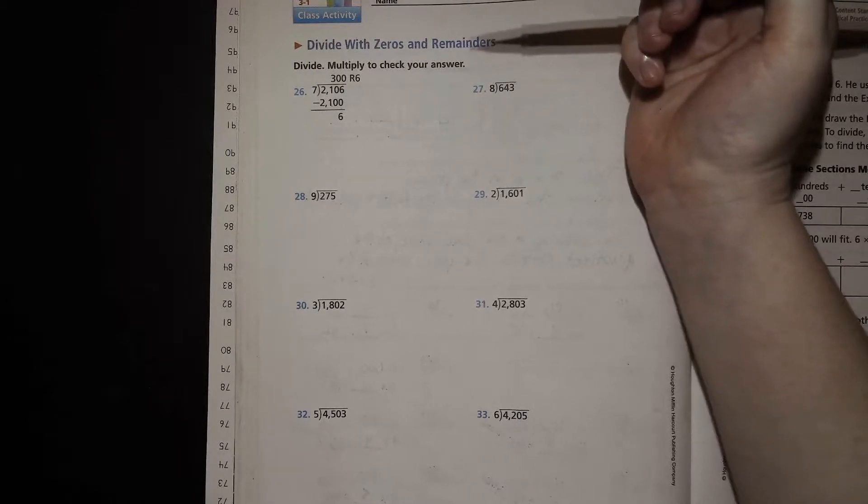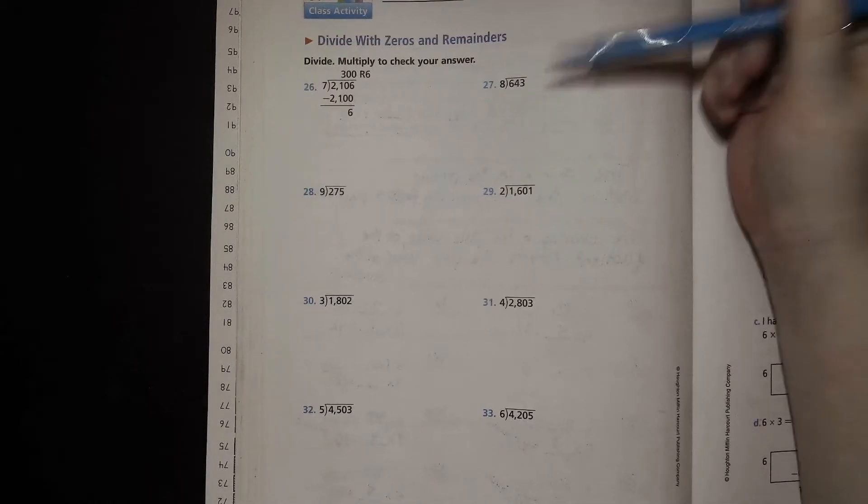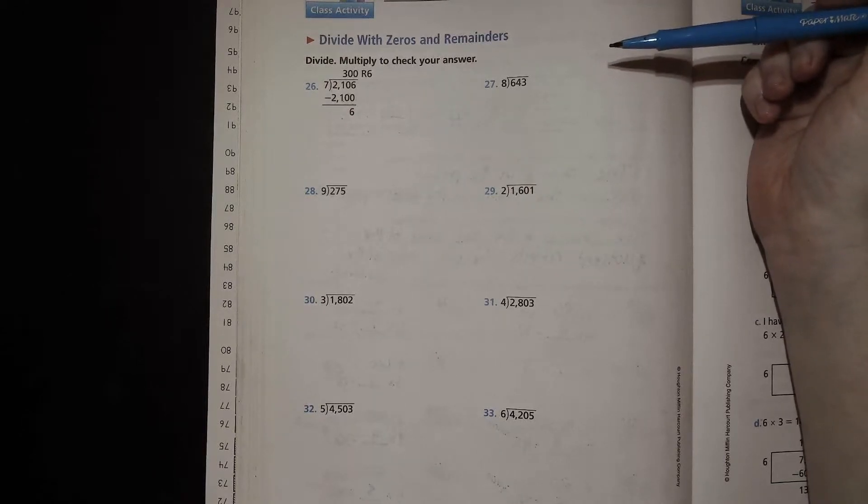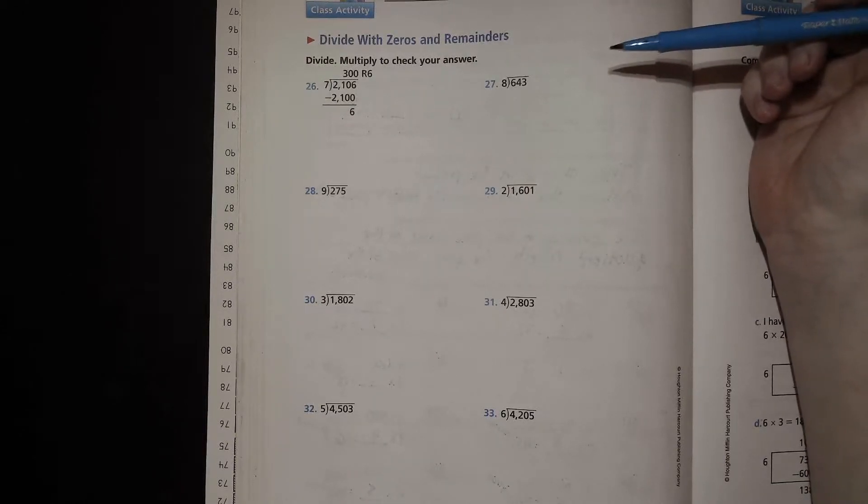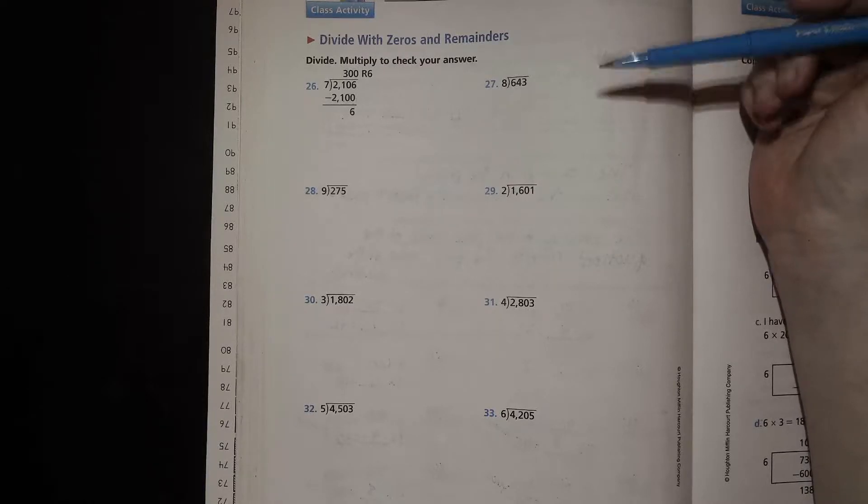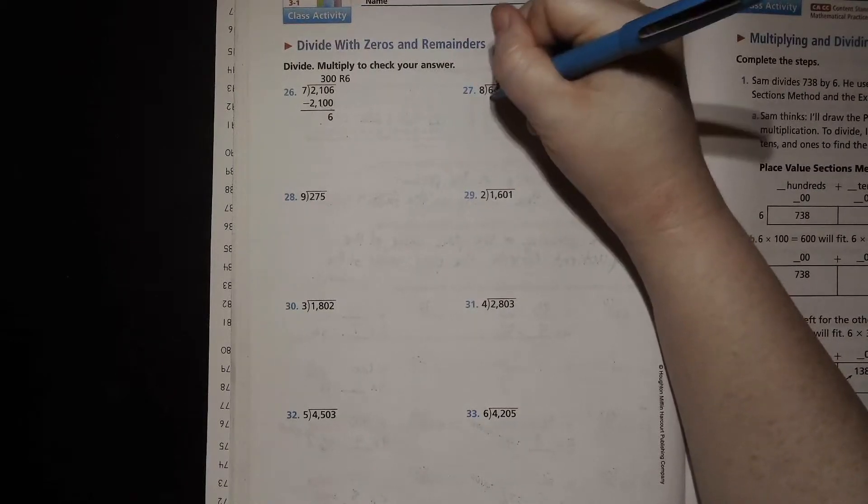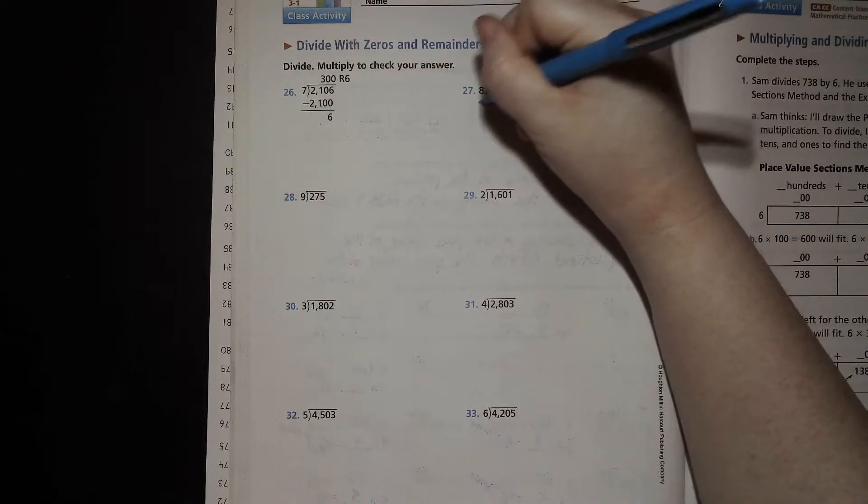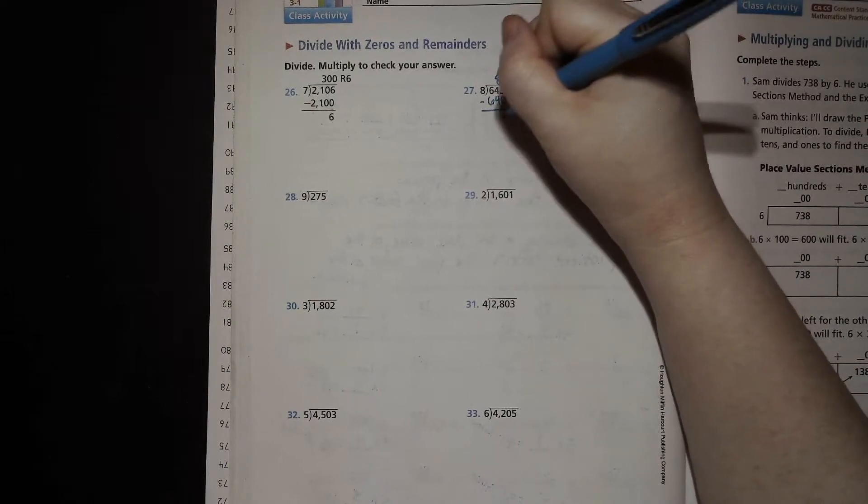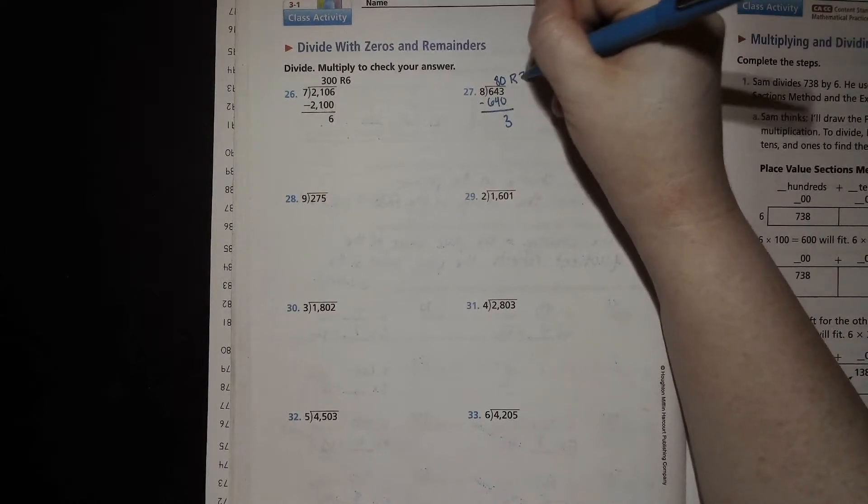Okay. 8 goes into 643. How many times? Well, 8 goes into 640, 80 times, right? Because 640 is 64 tens. So it's just 8 tens. 640. Line that up. Subtract. We end up having 3 left over. So we say remainder 3.